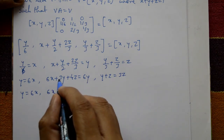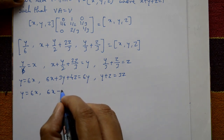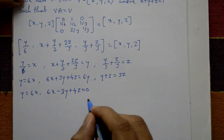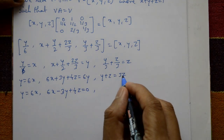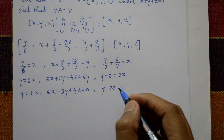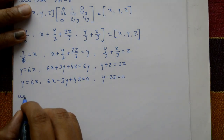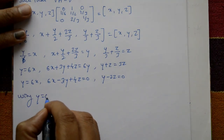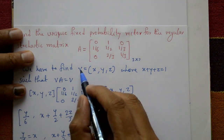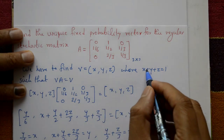Taking the third element equation: y/3 + z/3 = z, which gives y + z = 3z, so y minus 2z = 0. Now using y = 6x, we need to find the actual values of x, y, and z using the probability condition.